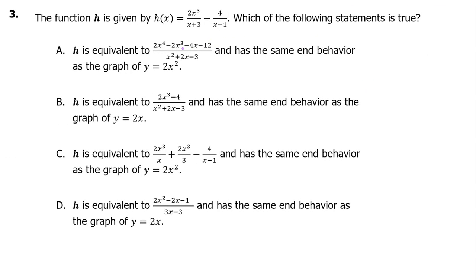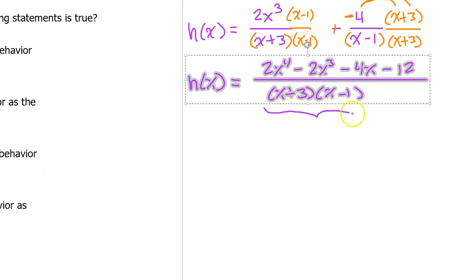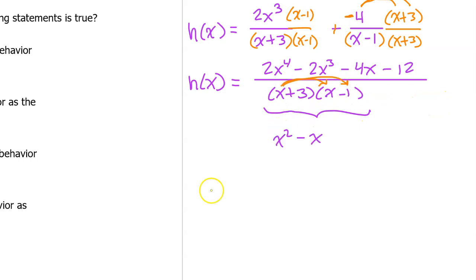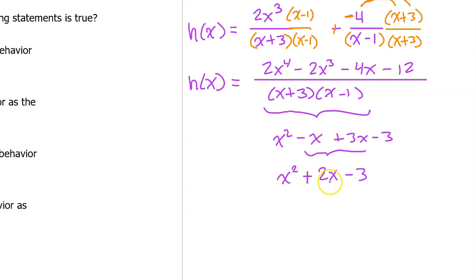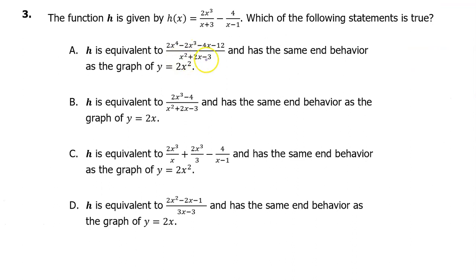Let's also verify the denominator by multiplying x plus 3 times x minus 1. Distributing the x gives x squared minus x; distributing the 3 gives 3x minus 3. Combining like terms gives x squared plus 2x minus 3, which matches the denominator for option A. So this is the answer. Additionally, h has the same end behavior as y equals 2x squared, since the leading terms 2x to the fourth over x squared simplify to 2x squared.